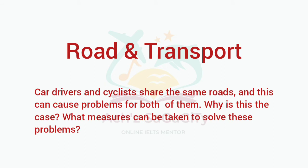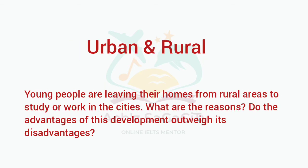Next topic: Road and Transport. Car drivers and cyclists share the same road and this can cause problems for both of them. Why is this the case? What measures can be taken to solve this? This comes under the problem-solution essay type.